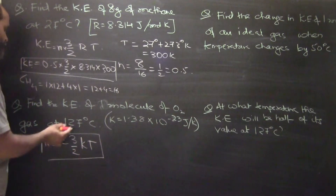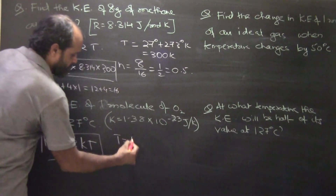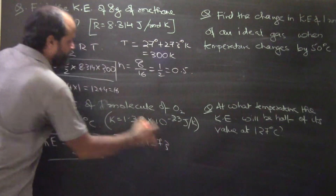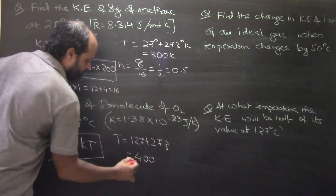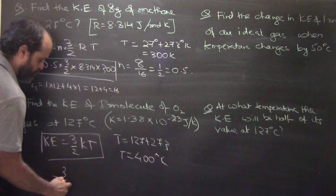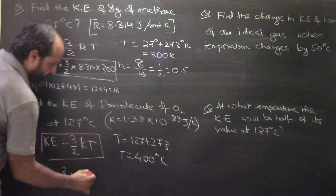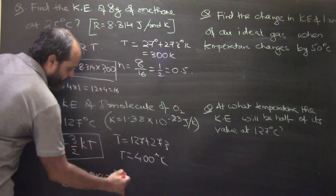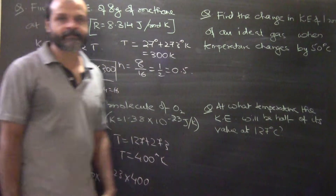127 degrees — that is all that has to be converted. So temperature will be 127 plus 273, that is going to be 400 Kelvin. So kinetic energy will be equal to 3 by 2 into Boltzmann's constant, that is 1.38 into 10 to the power of minus 23, into 400.